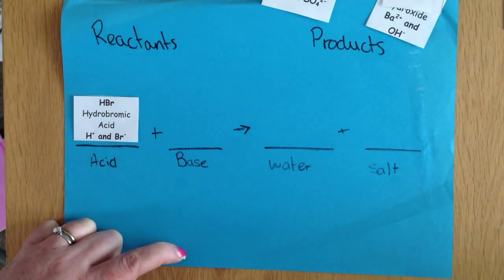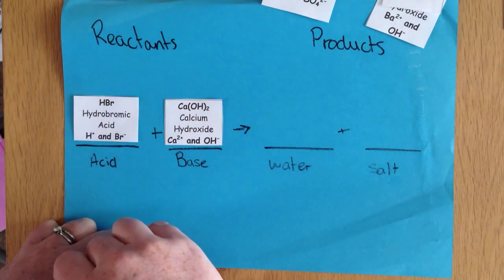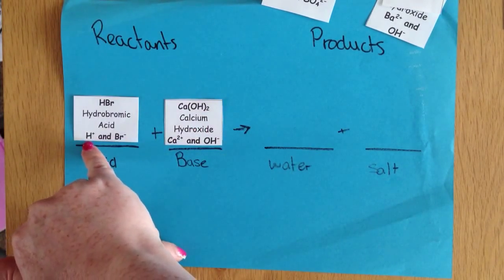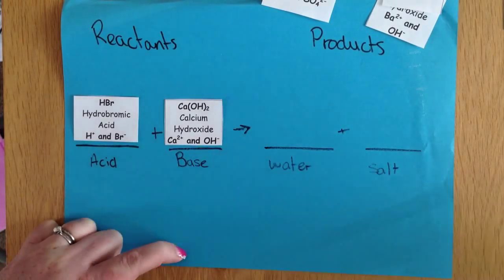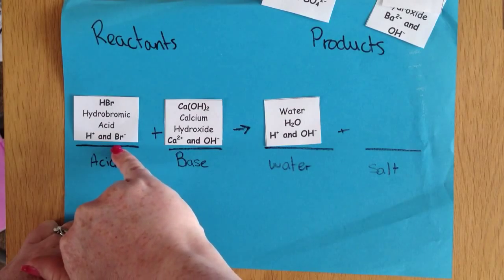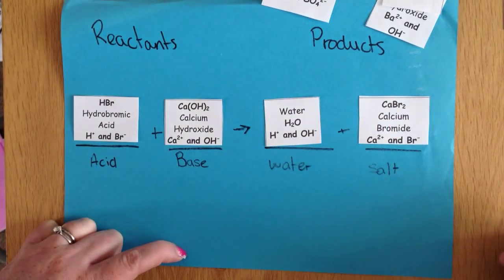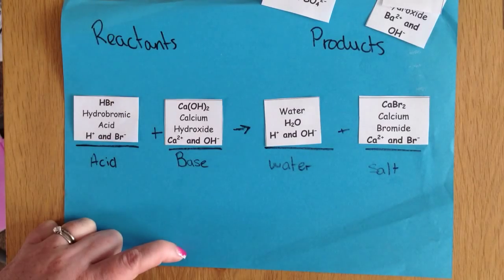Last one. We have hydrobromic acid. Not a very common one at GCSE but the principles are still the same. So we have our hydrogen ion and our hydroxide ion. Pop those two together and we get water. And then we have our bromate ion and our calcium ion. Pop those together and we get sodium bromide.